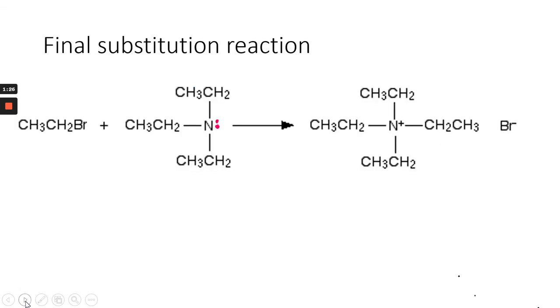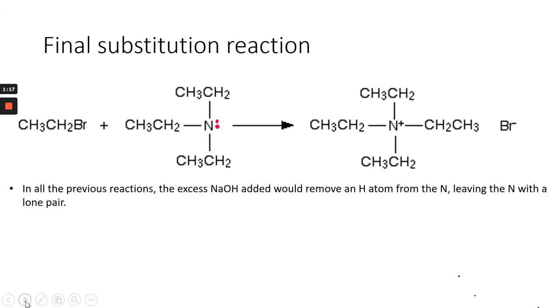This is the final one, because if you look at what happens, you get a nitrogen with four ethyl groups attached to it. This would be called tetraethyl ammonium bromide.